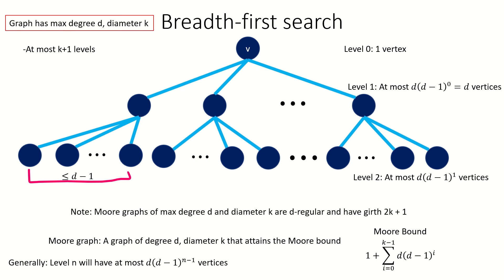Note that when this upper bound is reached, the girth of the graph will be 2k+1, as if it were greater than that, our diameter would have to be greater than k, and if it were less, a vertex's breadth-first search tree will have a level that is missing vertices, meaning the graph would not reach the Moore bound. Also, our graph is necessarily regular with degree d. Moore graphs are very rare — there are only a few cases of parameters d and k that have or could have Moore graphs.